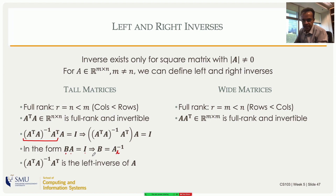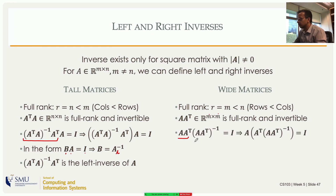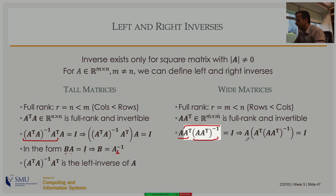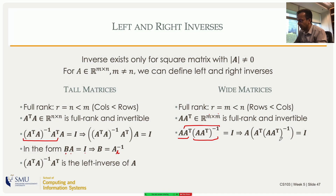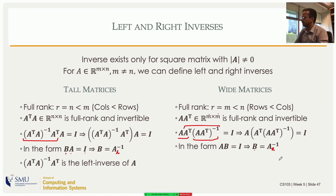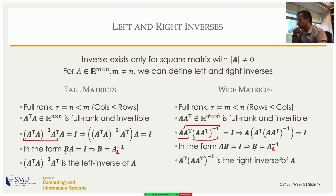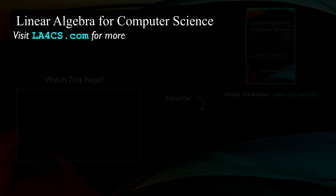For a wide full-rank matrix where m is less than n, A A transpose is a small matrix of rank m, so it is full rank and invertible. Multiplying A A transpose by its inverse on the right gives I. Grouping A transpose times (A A transpose) inverse gives a matrix B such that A times B equals I. This is the right inverse — multiplying A on the right gives I, but you cannot multiply on the left because the dimensions don't work.